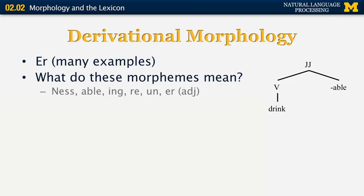'Un-' means negation — for example, 'do' and 'undo.' And '-er' for adjectives means the comparative form of the adjective. We can draw a diagram showing that a JJ is transformed into a sequence of a verb followed by the suffix '-able.' Morphemic rules can be used recursively: a long word like 'unconcernednesses' is formed from 'concern' by adding '-ed,' then '-ness,' then the negation 'un-,' and finally '-es' at the end for plural.